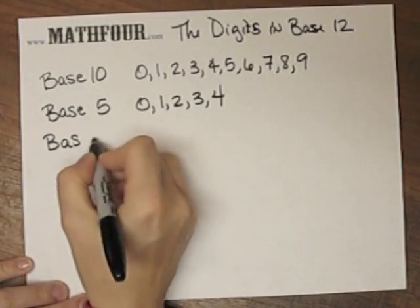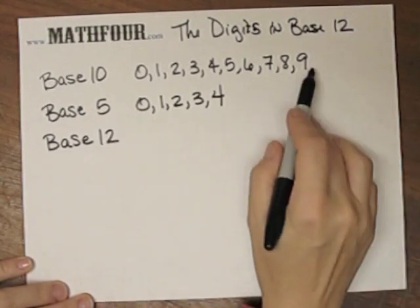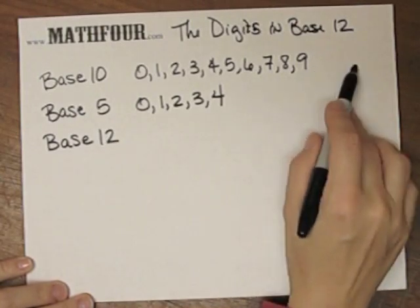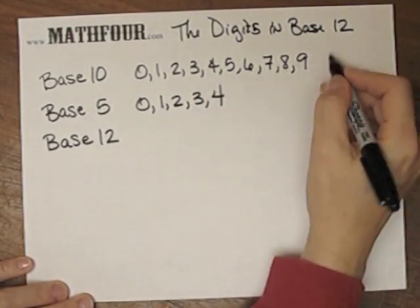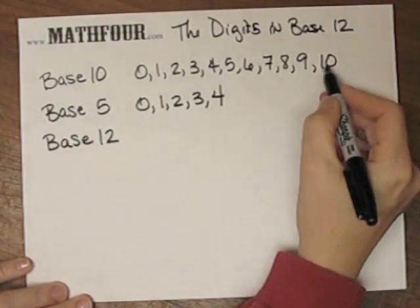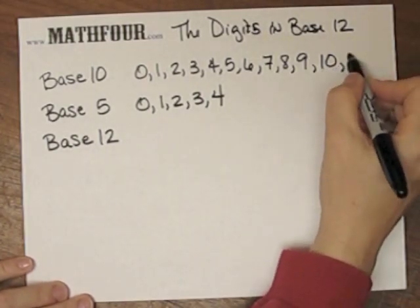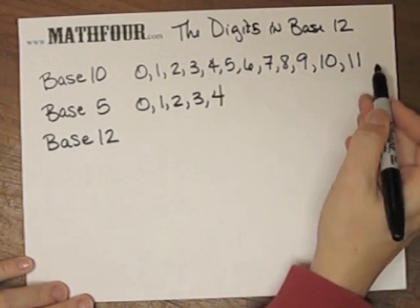When we get into bases higher than 10 though, we have no spaces because what we normally put after 9 in our world is representative of 1 set of 10 and 0 ones and 1 set of 10 and 1 single, which we call 11.